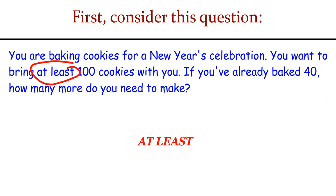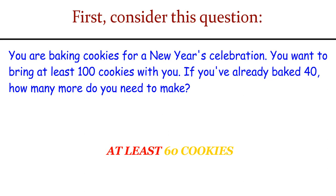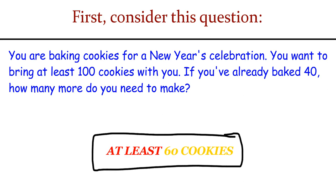If you've baked 40 and bake 60 more, that's great — that gets you to 100. If you bake 80 more, 120 is at least 100. If you bake 75 more, that's also fine. But baking 50 more doesn't reach the target. We need at least 60 more cookies on top of the ones already made. Equations tell us we need exactly a particular number, whereas inequalities tell us there's a target, but we're comfortable with values greater or less than it.